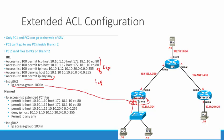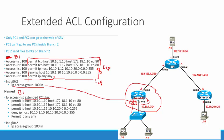And we do everything with an extended access control list as close to the source as possible. On branch 1, if I wanted to do it named, I'd do: IP access-list extended, give it a name such as PC-filter, and then the same statements become sub-configuration commands — tabbed in because it's a sub-configuration command. You'll create the named ACL and then under it do: permit IP host 10.10.1.10 going to 172.18.1.10 equal to web, and so on. It's the same statement, just now we're doing it named instead of numbered. We apply it the same way: IP access-group in.